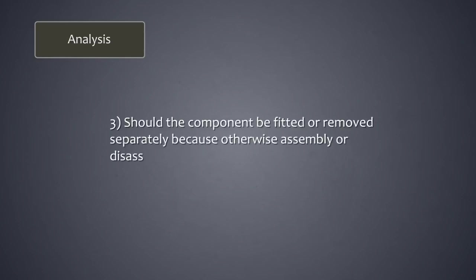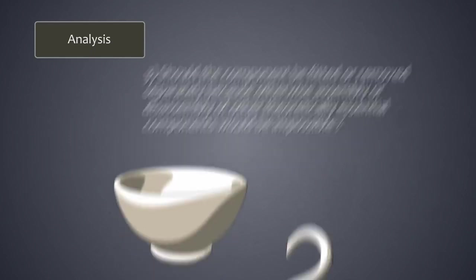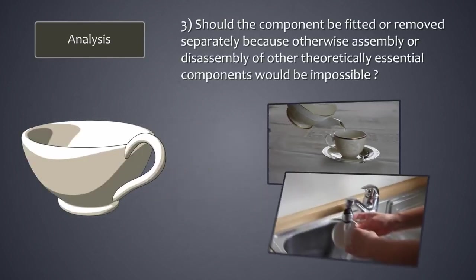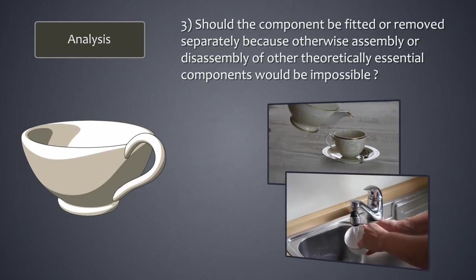The final elimination question is this: should the component be fitted or removed separately because otherwise assembly or disassembly of other theoretically essential components would be impossible? So in our example, we ask, does the ear need to be detachable in order to execute any of the processes associated with the product, like drinking or cleaning? The answer is once again, no.